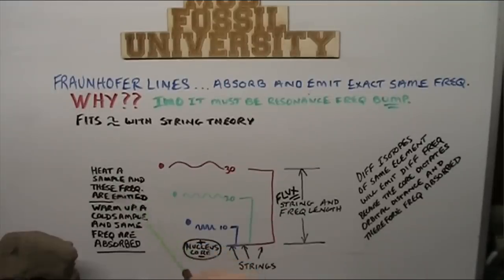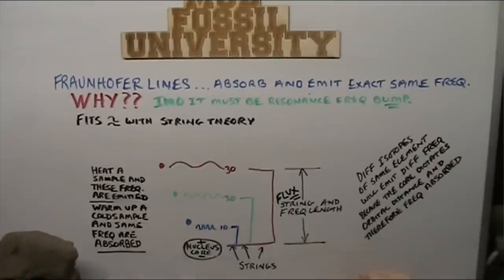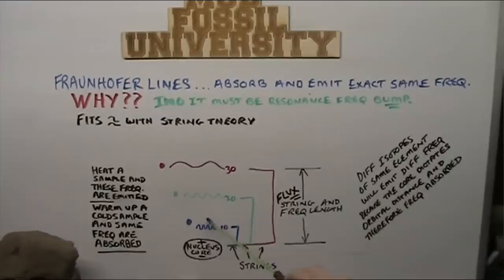All right, so just to sum it up, your nuclear core has distances from it determined by the negativity of the electrons, and the negativity that this forces it away. And they will collect in these elegant little orbitals. Now, if you heat a sample, the frequencies are emitted. All right, if you warm up a cold sample, in the same sample, the frequencies are absorbed. So, we know that we're dealing with these differences. The different isotopes of the same element, so the same number of protons, will emit different frequencies, because this will give it more push away if it has extra electrons in the core. Because the core dictates the orbital distance, and therefore the frequency absorbed.